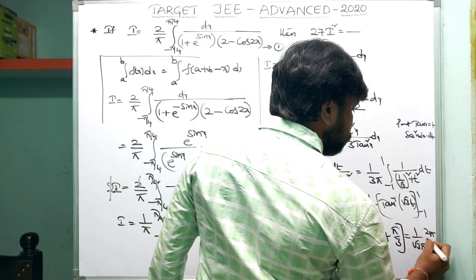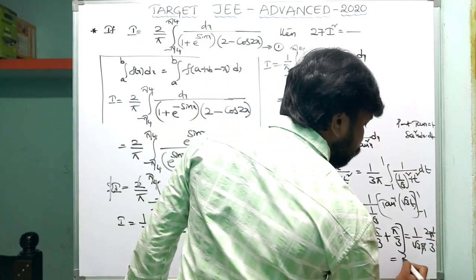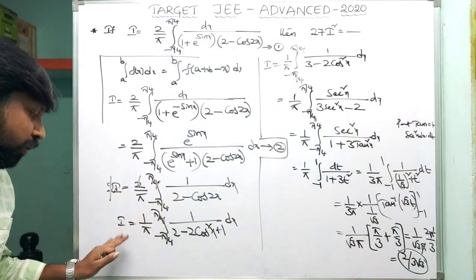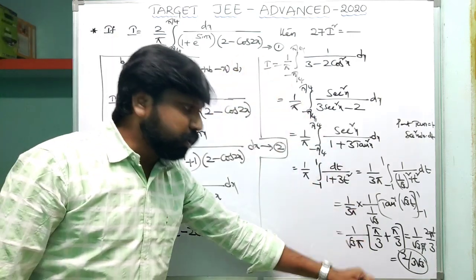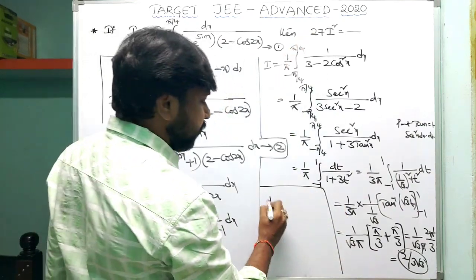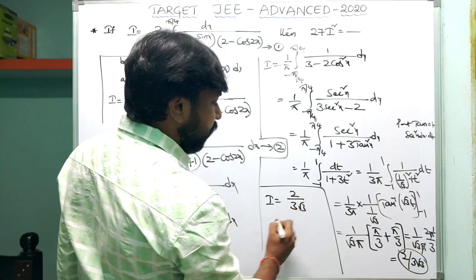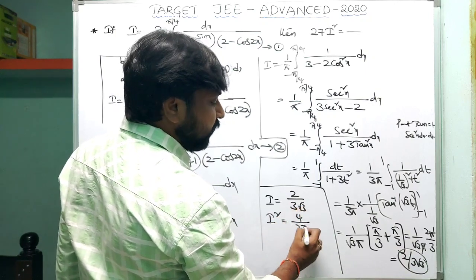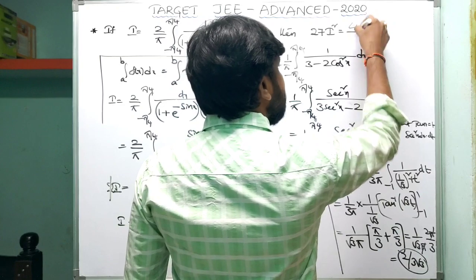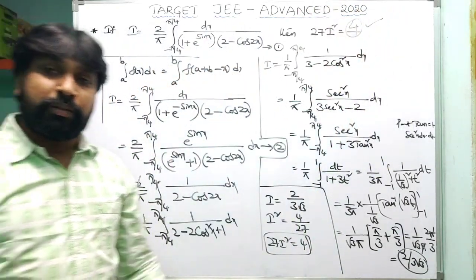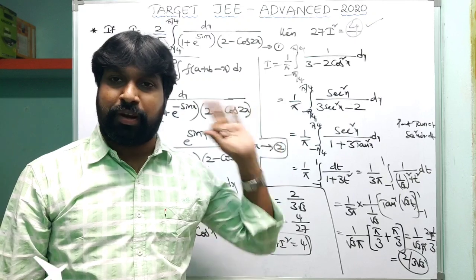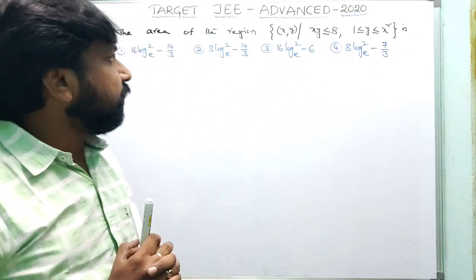Evaluating: tan⁻¹(√3) = π/3 and tan⁻¹(−√3) = −π/3, so the difference is 2π/3. Thus I = (1/(3π)) × √3 × (2π/3) = 2/(3√3). They ask for 27I²: squaring gives I² = 4/(9×3) = 4/27, so 27I² = 4. This is the answer. This kind of question is very easy when you know the properties of definite integration.